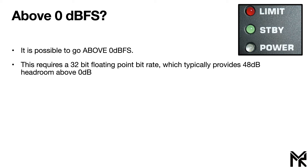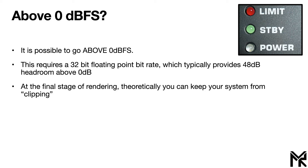I realize I'm getting very technical, but with 32-bit floating-point you can store very small and very large numbers. When they spec'd out 32-bit or 64-bit floating-point audio, they actually allowed some of those bits to be reserved for representing numbers that are technically larger than 0 dBFS.